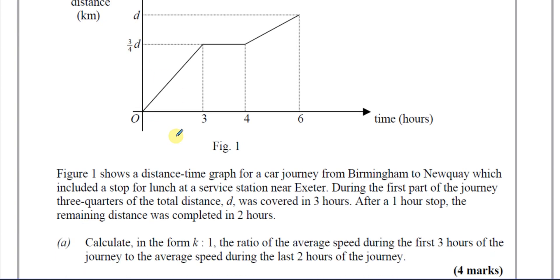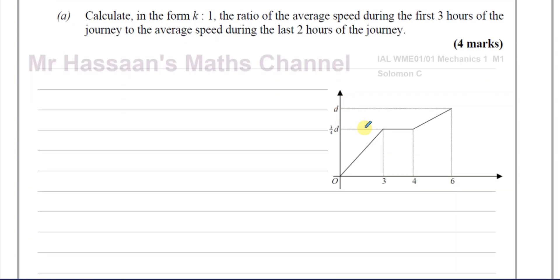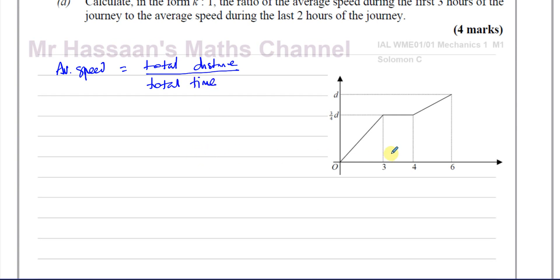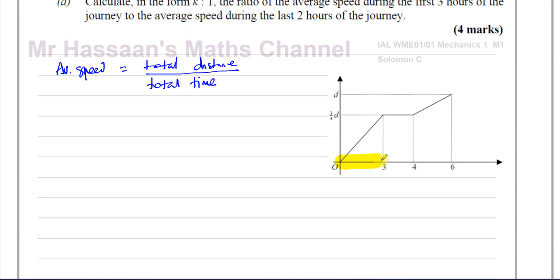Calculate in the form k to one the ratio of the average speed during the first three hours of the journey to the average speed during the last two hours of the journey. So we want to find the ratio of the average speed. The average speed is equal to the total distance travelled over the total time taken. We've got two sections to compare — the first part of the journey and the second section.